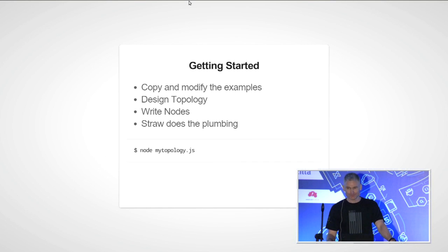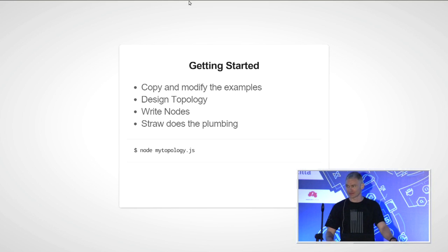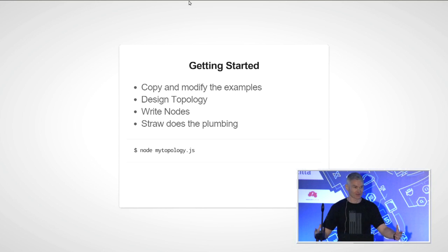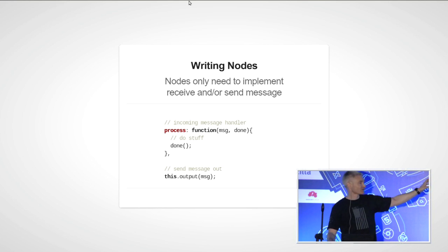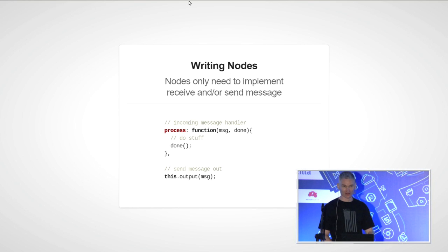To start playing with Straw, look at the examples folder in the codebase. There are different ways to configure topologies and lots of different models. Once you're familiar with that, design a topology for your problem, write some nodes, and Straw takes care of the rest. At its core, when writing nodes you only need to worry about two things: processing incoming messages by overriding a base function with a callback when finished, and outputting data with this.output. Straw handles where messages go and where they come from.